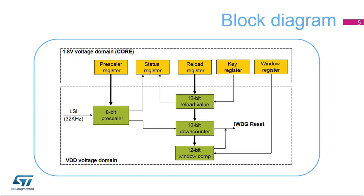The 8-bit pre-scaler is used to divide the LSI oscillator frequency. When the IWDG is started, the 12-bit counter starts counting down from the reset value of 0xFF. To refresh the IWDG counter, the key value 0xAAAA must be written in the key register to reload the counter value. If the down counter reaches the end-of-count value 0x000, a system reset is generated.